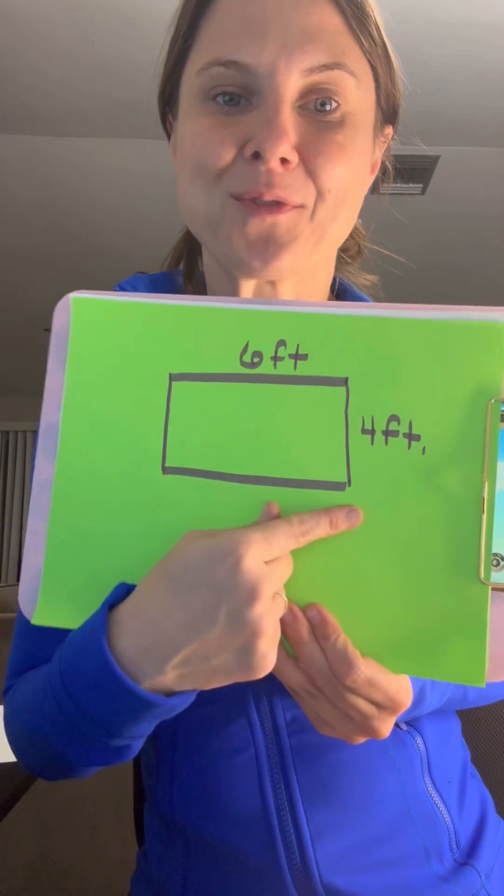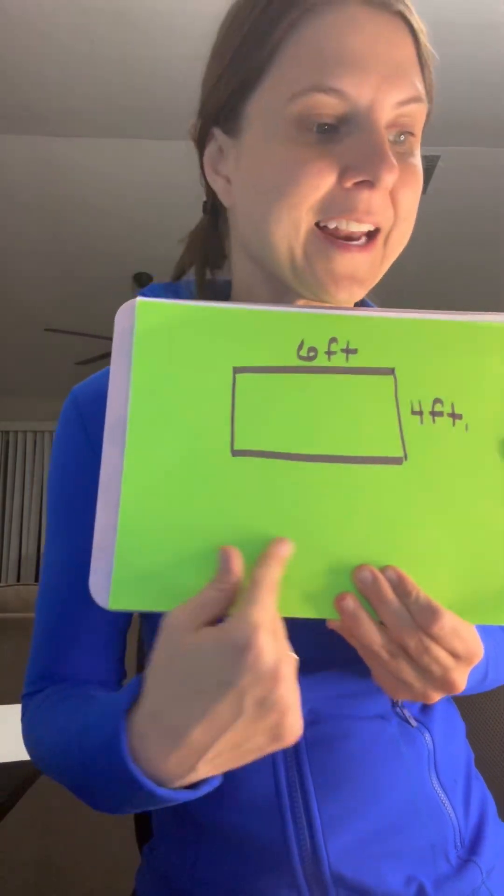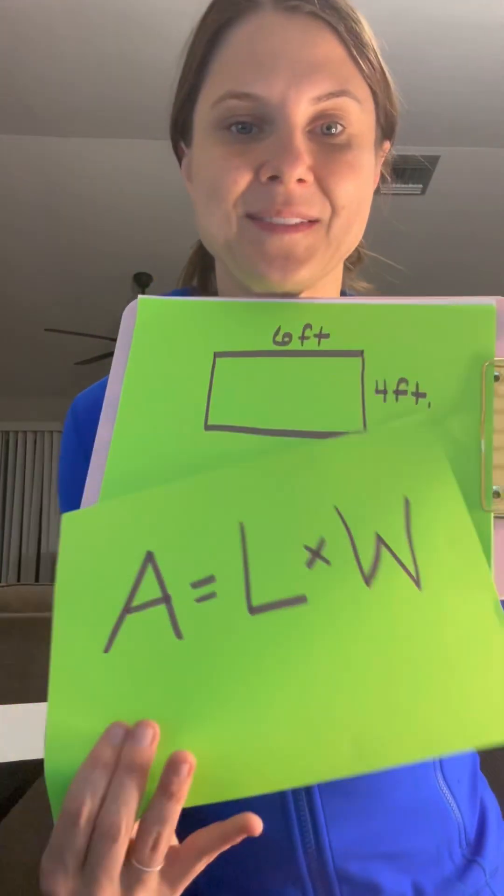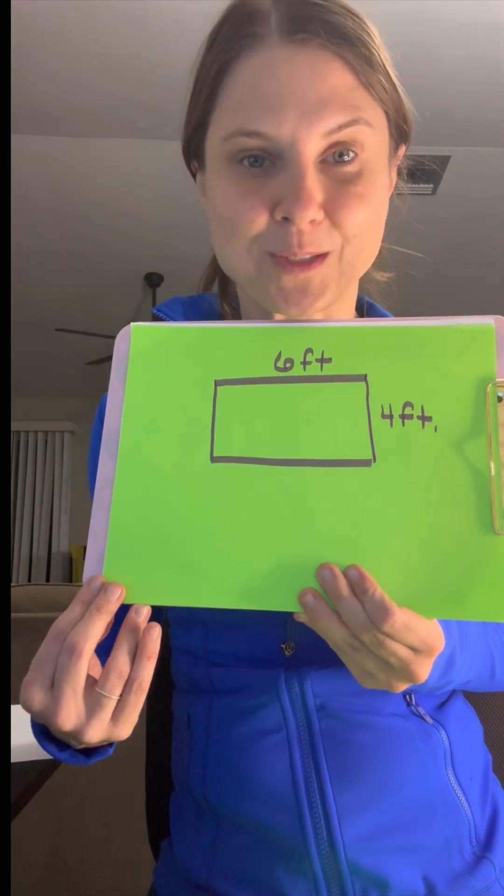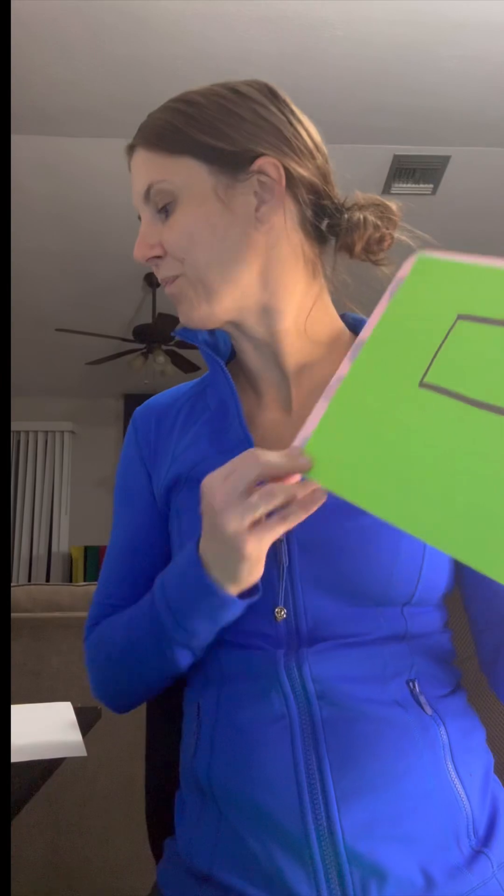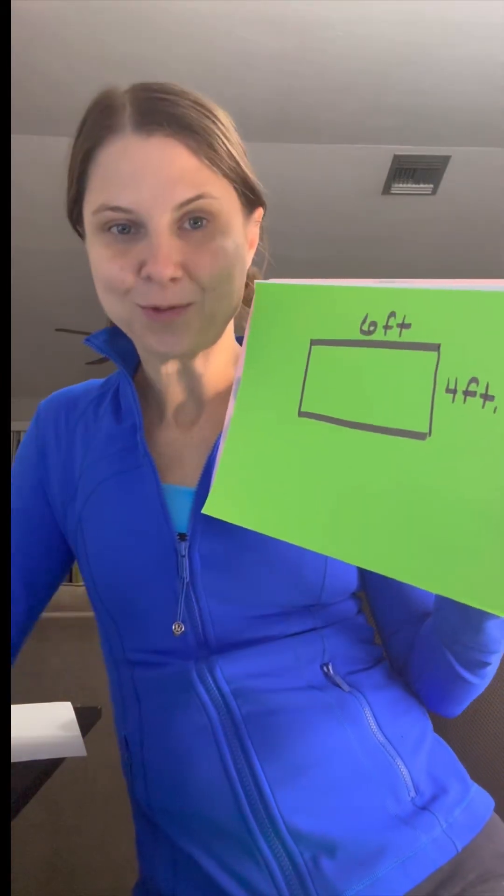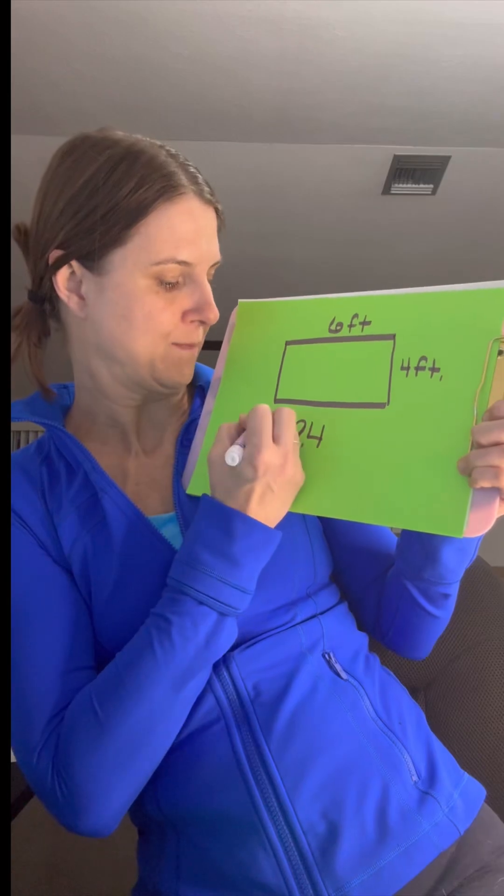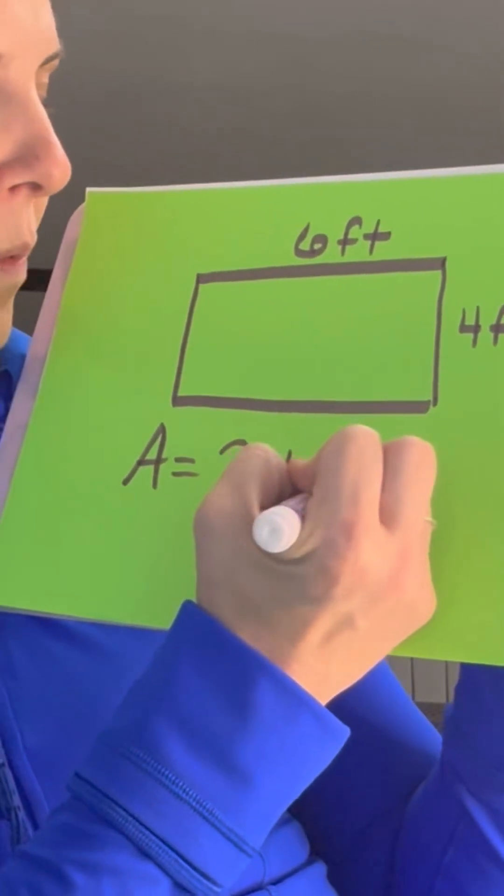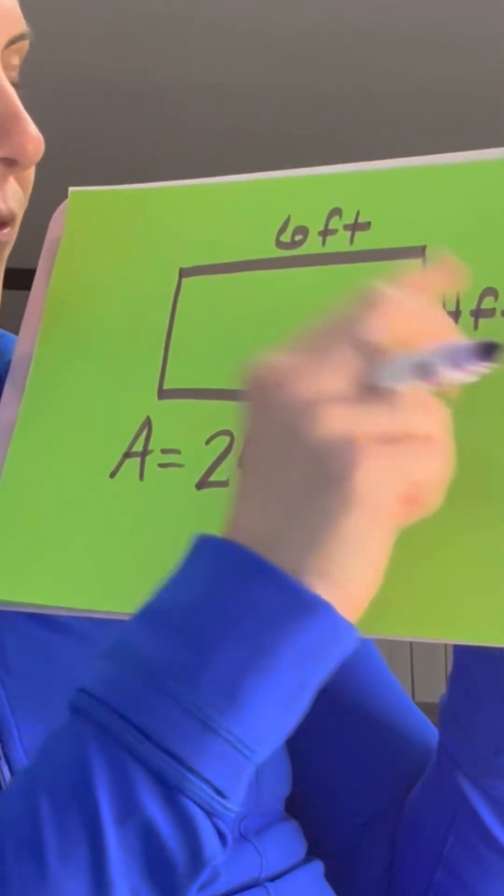So you just plug in the numbers, six feet and four feet. We plug it in: length times width. So six times four which would be 24, and then for area you would say square feet.